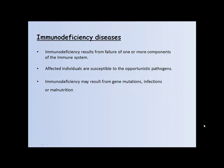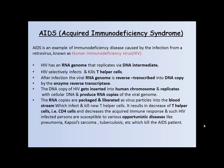Immunodeficiency diseases result from the failure of one or more components of the immune system. Affected individuals are susceptible to opportunistic pathogens. Immunodeficiency may result from gene mutations, infections, or malnutrition.